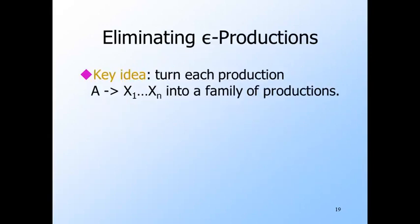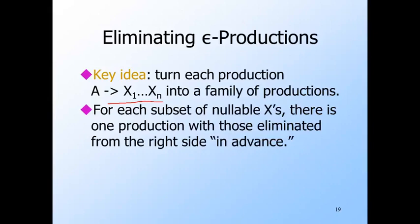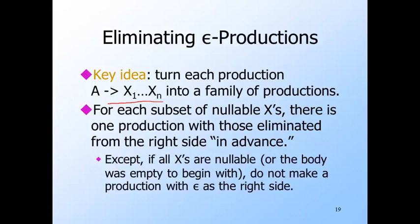To eliminate epsilon productions from our grammar, we need to turn each production — say A goes to X1 through Xn — into a possibly large number of productions. The idea is to guess which of the nullable symbols in the body of a production will derive epsilon in a particular derivation. Since we make all possible guesses by creating many different productions, we always manage to guess right. More precisely, for each set of nullable Xi's, we delete these from the body of the production and make a new A production. Note that if two of the Xi's are the same nullable symbol, then we have to consider the possibility that one position derives epsilon and the other does not. That is, we form one production for each set of positions that hold nullable symbols, not just for each set of nullable symbols. However, in the special case that all the Xi's are nullable symbols, we do not consider the set of all positions and we do not create a new production with the epsilon body.